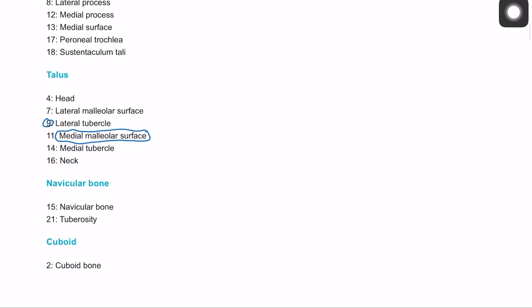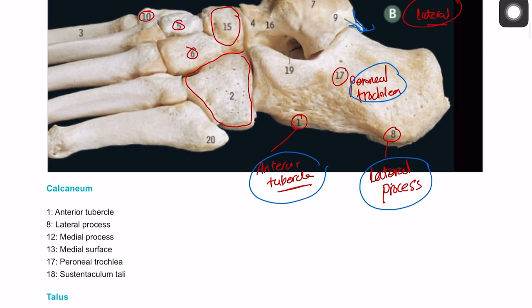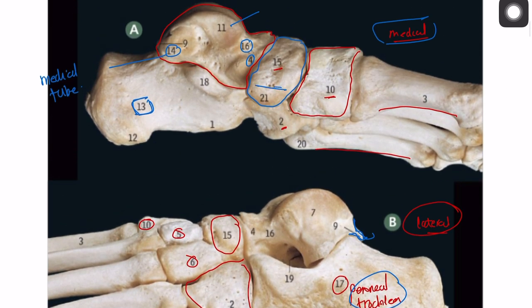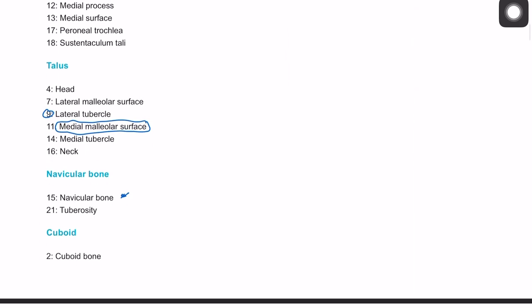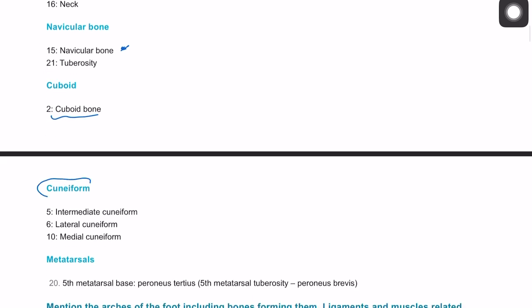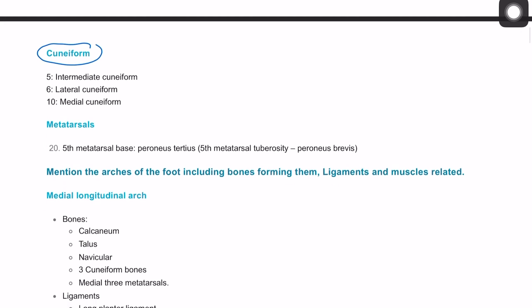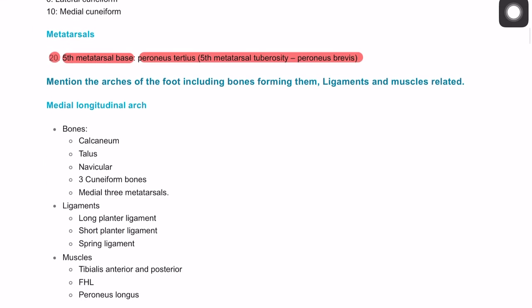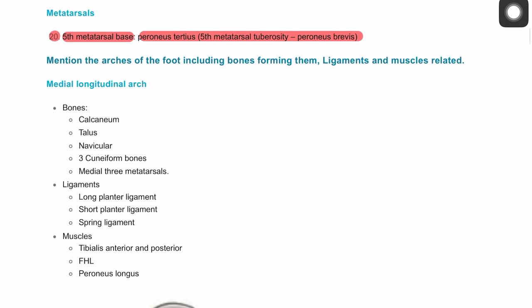The navicular bone was number 15, with a tuberosity or tubercle extending below it. We also covered the cuboid bone and the cuneiforms. Number 20 is the base of the fifth metatarsal, which is an attachment for the peroneus tertius and peroneus brevis muscles.